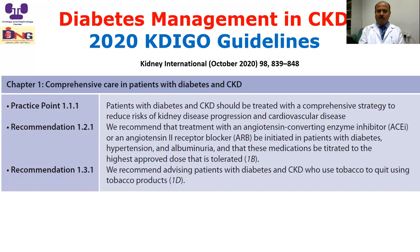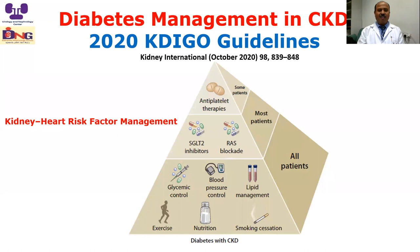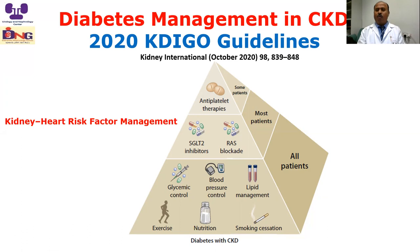The guidelines also recommend advising patients with diabetes and CKD who use tobacco to quit smoking — lifestyle modification is of paramount importance. This is the pyramid of care, putting heart and kidney together. For all patients with kidney disease and diabetes, we should target all these domains: exercise, nutrition, stopping smoking, glycemic control, blood pressure control, and lipid control. For patients with hypertension and albuminuria with preserved GFR, we can consider SGLT2 inhibitors. Antiplatelet therapy should be weighed for cardiovascular risk and benefit.